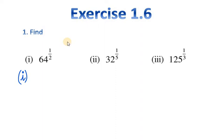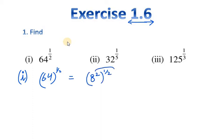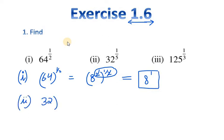Let's start with Exercise 1.6, Question 1. The first part is 64 raised to the power half. We know that 64 can be written as 8 squared. Since we have a power on a power, we multiply them: 2 times 1 over 2. The 2s cancel out and we are left with 8. So the answer for the first part is 8.